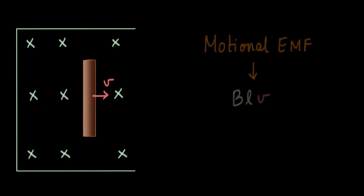We know that an EMF is induced in a moving conducting rod which is moving in a region of magnetic field, and that EMF is called Motional EMF. The magnitude of that EMF is given by BLV, where B is the magnetic field strength.